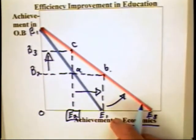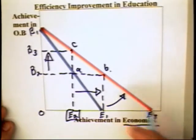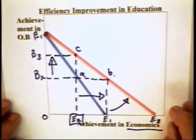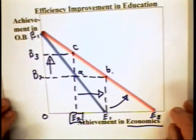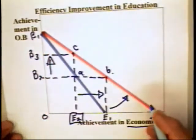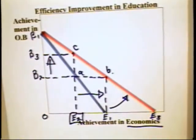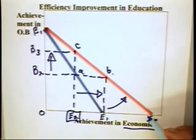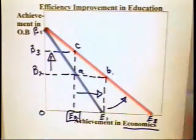Notice the management problem here. And that is, if the dean decides to reward professors solely based on the performance of their students, then the dean can be rewarding the professor in OB. The economics professor is the one who makes the innovation, but the OB professor gets the reward.